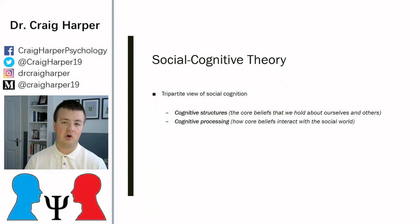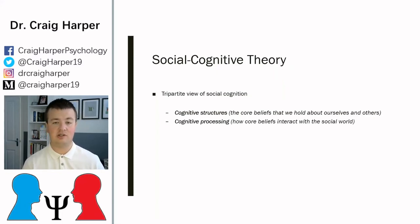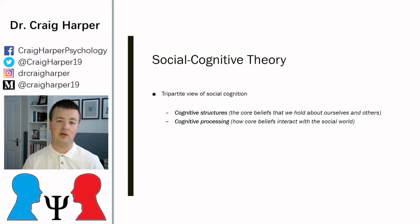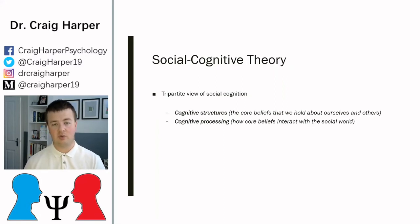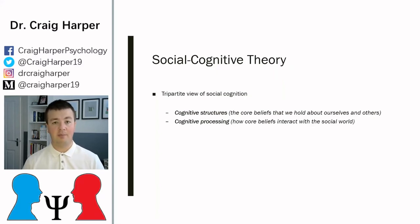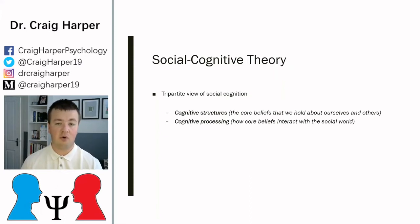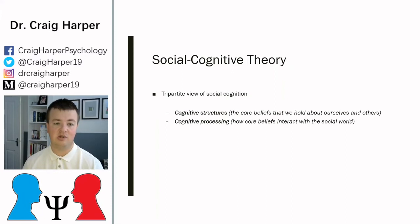The second construct is cognitive processing — how we use those cognitive structures to inform how we process information. This is how core beliefs interact with what's going on in the social world: how we compartmentalize and prioritize them when we have competing task demands, to make sense of a situation and formulate potential behavioral responses.